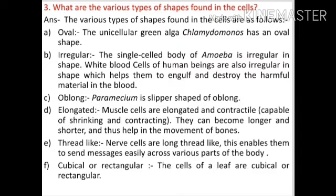Further cell shapes: (3) Oblong — Paramecium is slipper-shaped or oblong. (4) Elongated — muscle cells are elongated and contractile, capable of shrinking and contracting, helping in the movement of bones. (5) Thread-like — nerve cells are long and thread-like, enabling them to send messages across various parts of the body. (6) Cuboidal or rectangular — cells of a leaf are cuboidal or rectangular.